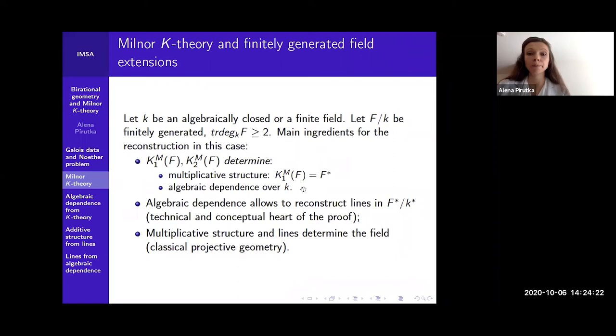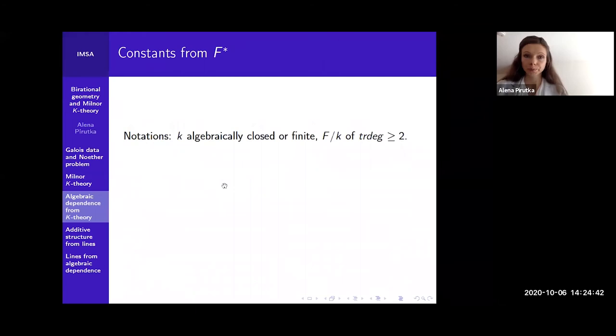This is a sketch of the theorem on reconstruction from Milner K-theory. At the end, the arguments are quite elementary but tricky in these two last steps. The algebraic dependence actually uses difficult results. We use the Bloch-Kato conjecture proved by Voevodsky. If we have degree N equals two, then it's the Merkurjev-Suslin theorem.